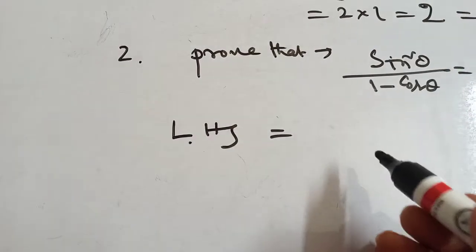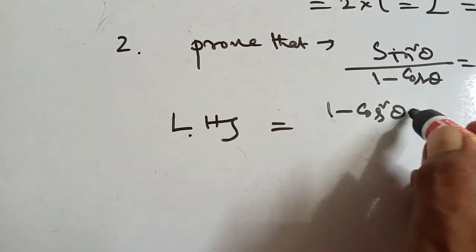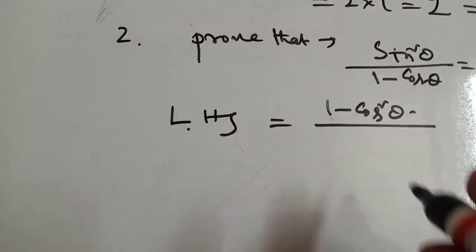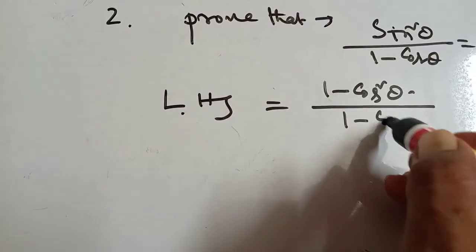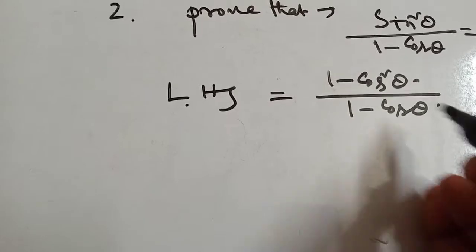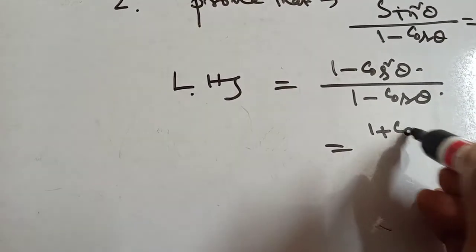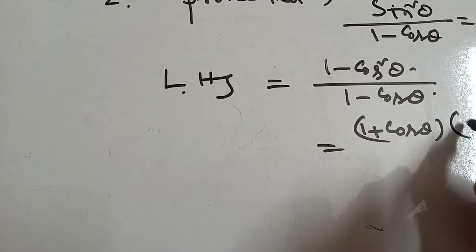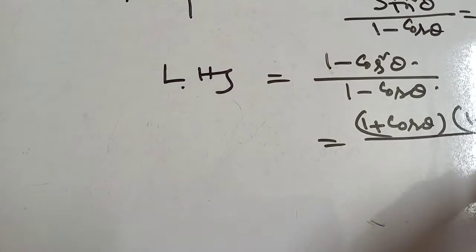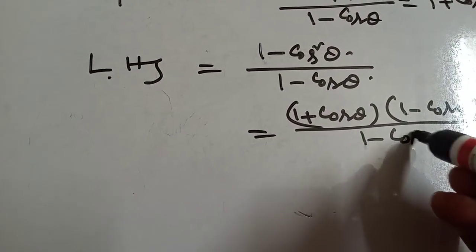Left hand side: sin squared theta. Since sin squared theta plus cos squared theta equals 1, we can write sin squared theta as 1 minus cos squared theta. Now apply the formula a squared minus b squared equals a plus b into a minus b, so we get 1 plus cos theta into 1 minus cos theta, divided by 1 minus cos theta.